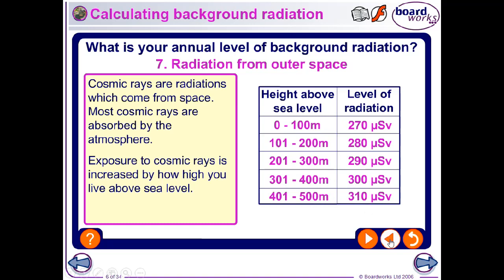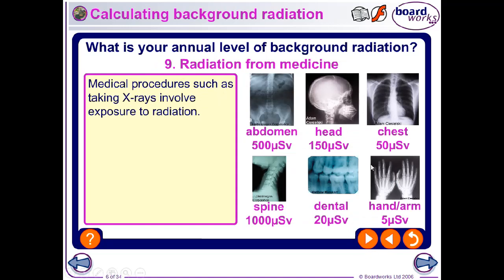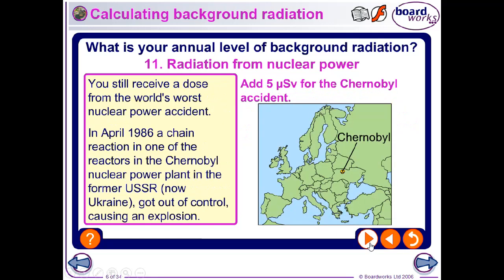At higher altitudes, there is less atmosphere between us and outer space, and the atmosphere shields us from cosmic rays. Flying in planes gives an extra seven micro sieverts per hour of air travel. Medical procedures like dental or head X-rays also involve exposure to radiation. Living near a nuclear power station might give about 10 micro sieverts per year.